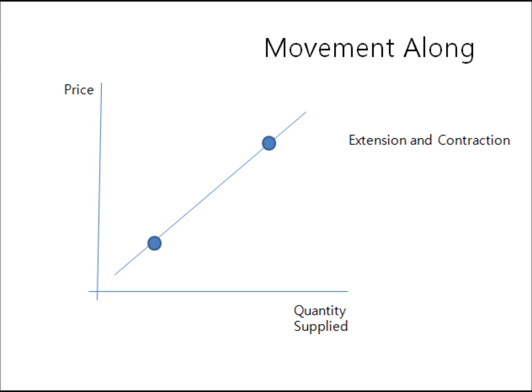At point one, we wanted this much. At point two, we want to make this much. We are making this much. So the amount of things we were supplying increased. That's extension of supply.